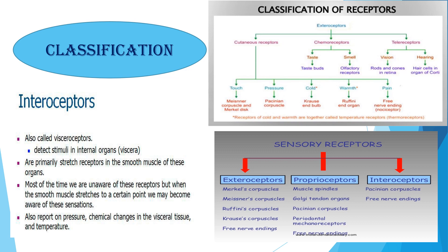Interoceptors are of two types: Proprioceptors and Visceroreceptors. Proprioceptors are located in the muscle, tendon, joint, etc., and provide information about body position and movements. Visceroreceptors are present in the walls of different visceral organs. The classification of exoreceptors and interoceptors is shown separately — examples are in your book. Read at least one example which justifies each classification name.